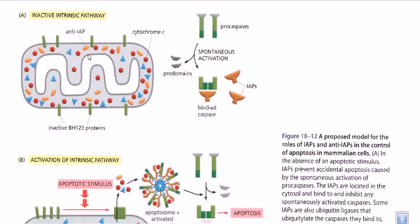When BH123 proteins are inactive, BCL2 and other anti-apoptotic factors block them from coming closer and forming any complex, preventing cytochrome c from leaving the intermembrane space. Now, procaspase molecules can undergo spontaneous cleavage to form an active tetrameric caspase molecule. However, even though active caspase molecules are formed, they are unable to function because there are IAP molecules — inhibitor of apoptosis proteins — which prevent these caspase molecules from acting as killer molecules, blocking their activity in normal situations.